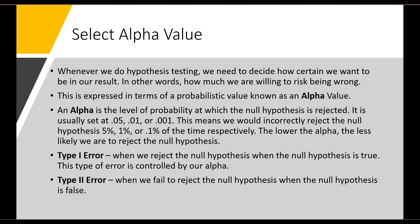Whenever we do hypothesis testing, we need to decide how certain we want to be in our result — in other words, how much risk are we willing to take that we are wrong. This is expressed as an alpha value. An alpha is the level of probability at which the null hypothesis is rejected. It is usually set at 0.05, 0.01, or 0.001, meaning we would incorrectly reject the null hypothesis 5%, 1%, or 0.1% of the time, respectively. The lower the alpha value, the less likely we are to reject the null hypothesis.